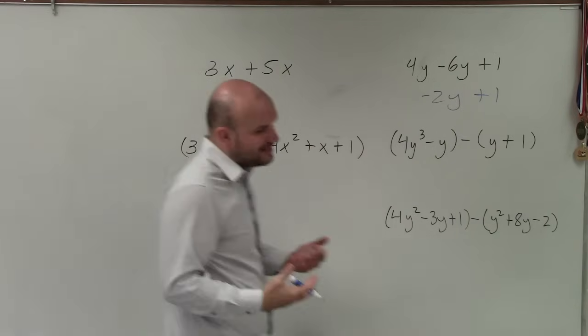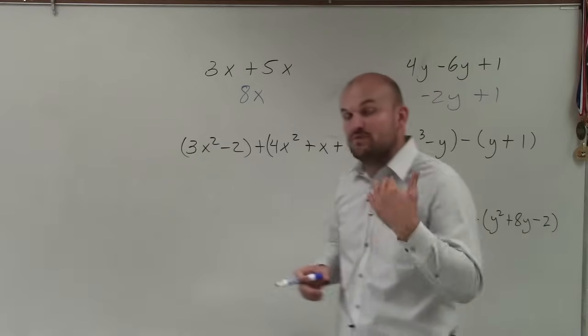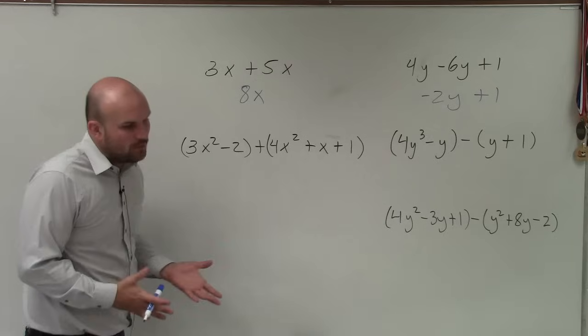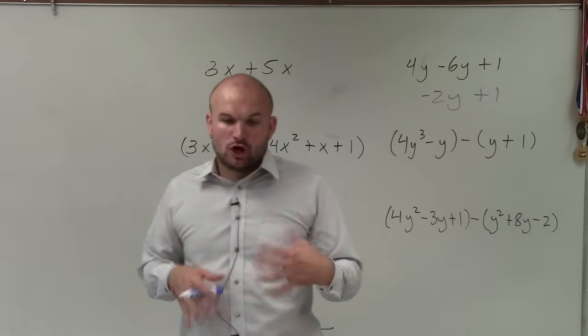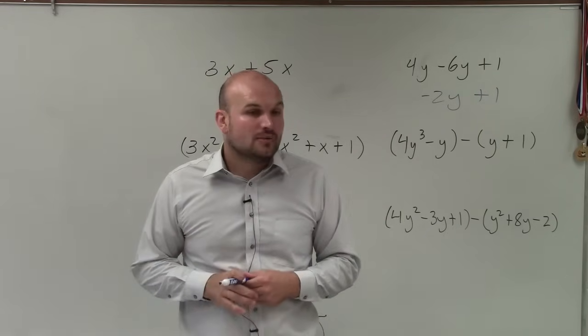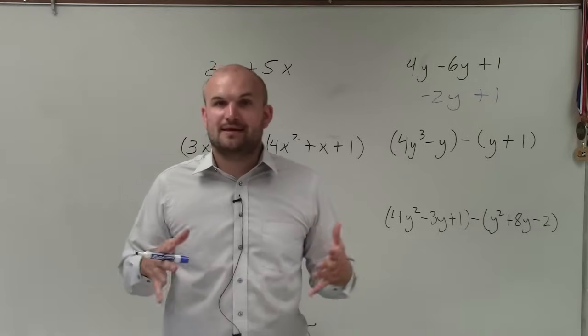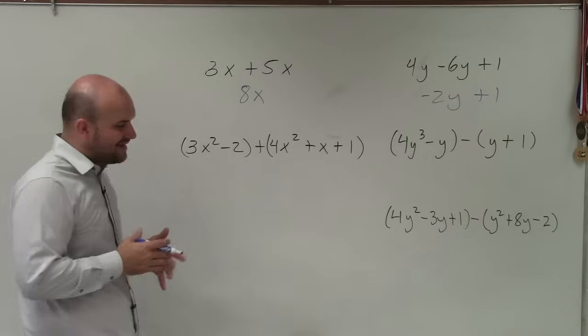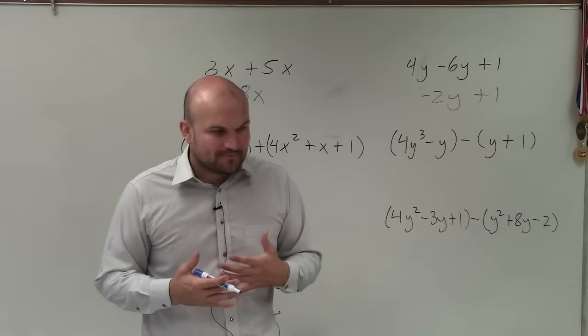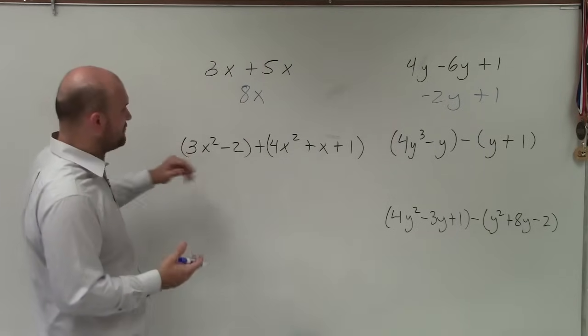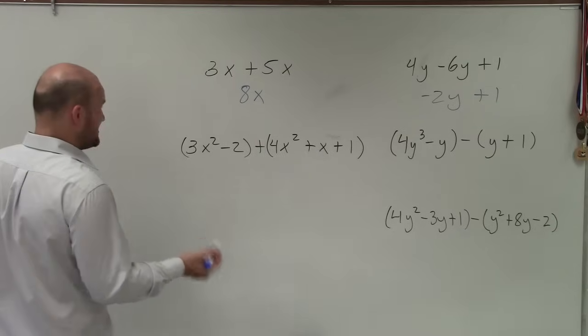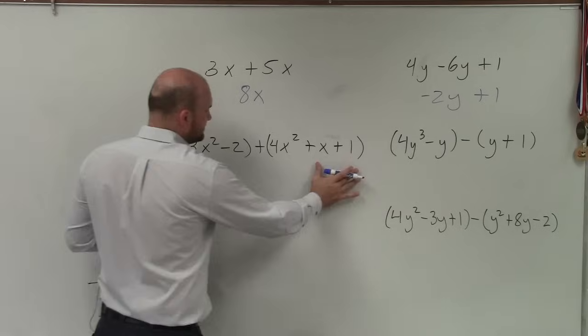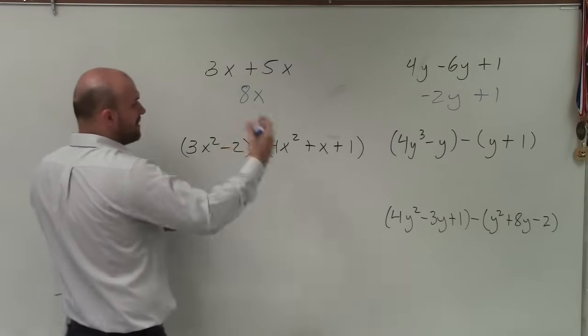But now that we get into a little bit more complicated, when we actually have polynomials with multiple terms within them, how are we going to do that? And there's a couple different ways. One way is what we call the vertical method, and the other way is just rewriting them so they're together. So usually with addition, it's not necessary to use the vertical method. However, some students still like to use that. And what basically the vertical method is, is you take your terms and you write them one over each other.